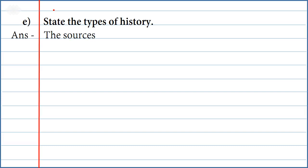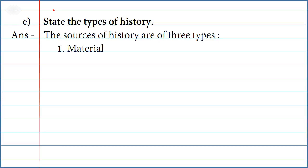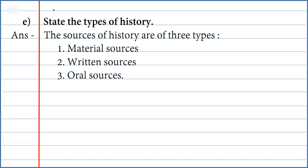E. State the types of sources of history. Answer: The sources of history are of three types — first, material sources; second, written sources; third, oral sources.